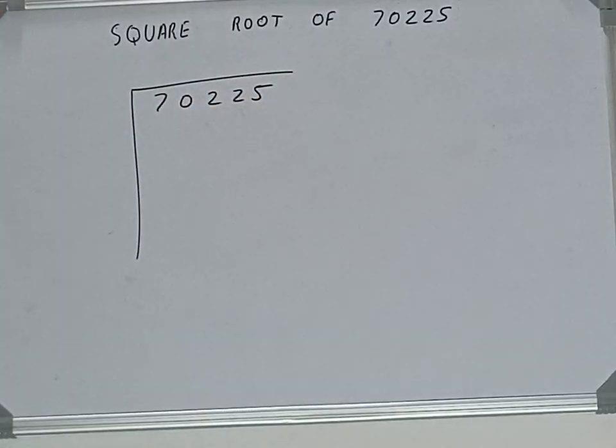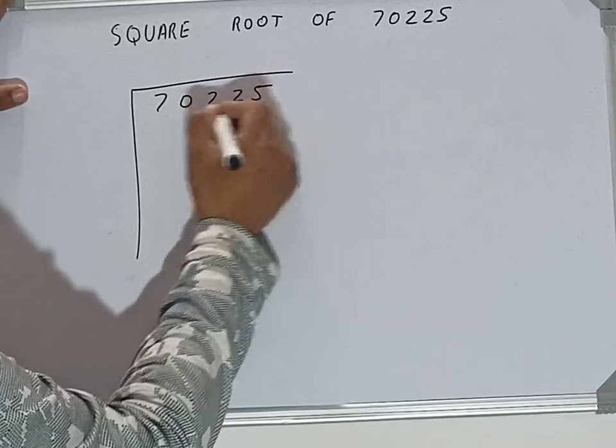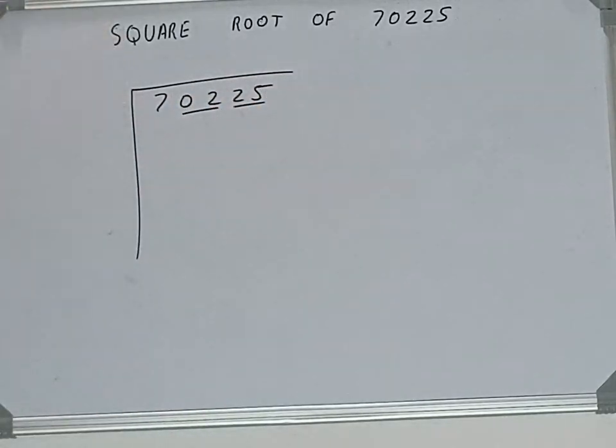The next thing we need to do is form pairs from the right-hand side. So one pair will be this, one pair will be this, and this seven will be left out. So first we'll divide this seven, and then we'll bring down the pairs.